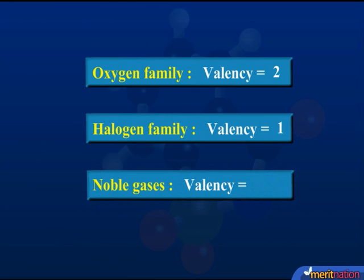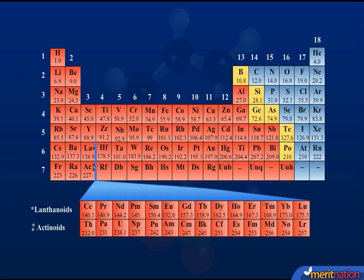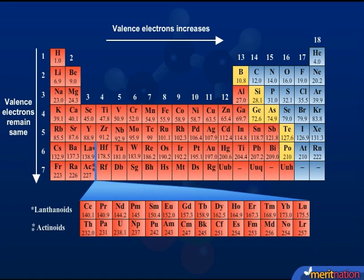The valency of the noble gases, as you might know, is 0. So, what did we observe? We observed that the number of valence electrons remain same down the group, but increase across a period.